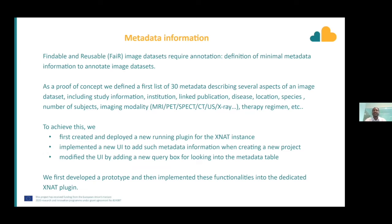As a proof of concept, we defined a first list of 30 metadata elements describing several aspects of an image dataset, including study information, institution, number of subjects, and imaging modality such as MRI or PET. To achieve this, we created and deployed a new plugin for the XNAT instance, implemented a new UI to add metadata information when creating a new project, and modified the UI on the index page where you can query the metadata using key-value pairs saved at project creation.